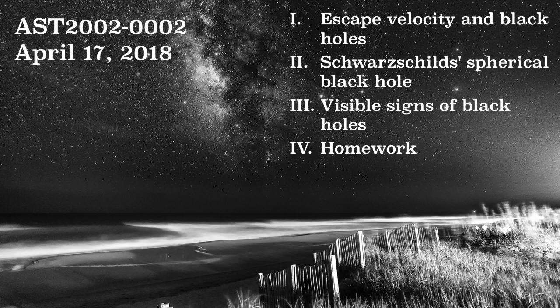We're going to start with a common everyday explanation of black holes in terms of escape velocity. Then I'm going to work you through some questions with iClickers to get you to think geometrically. We have a ton of iClicker questions. The first iClicker question is a short answer question. And we're going to try to understand the very simplest kind of black hole, which is called the Schwarzschild black hole.